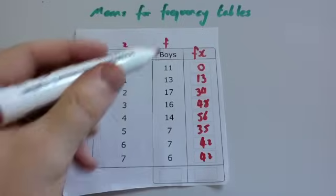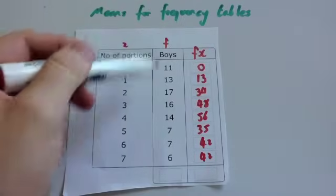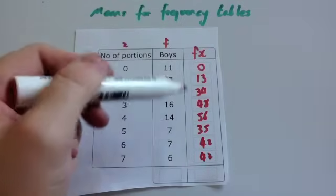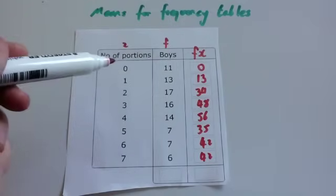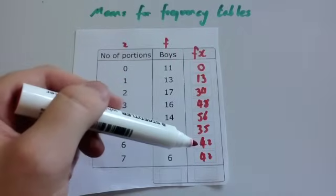So what we've done is we've times together the x by the f to get the fx column. So whenever you're working out the mean from a frequency table, what you do is you multiply the frequencies by the values and get the fx column.